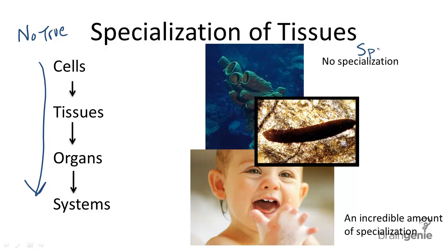Organisms with no tissue specialization include the sponge from the phylum Porifera. The sponge is categorized as having relatively primitive developmental characteristics as an animal because the cells are relatively unspecialized, meaning they don't have specific functions.